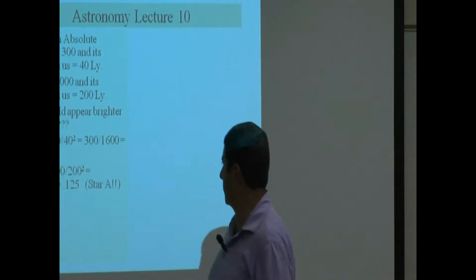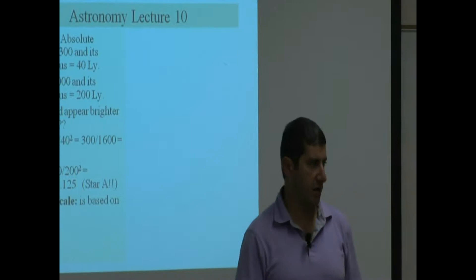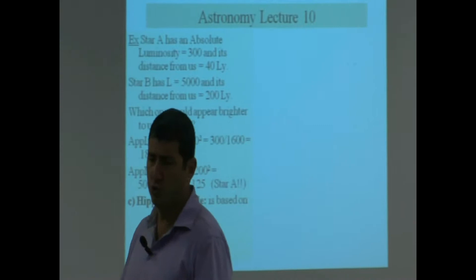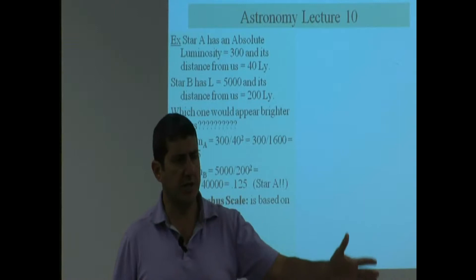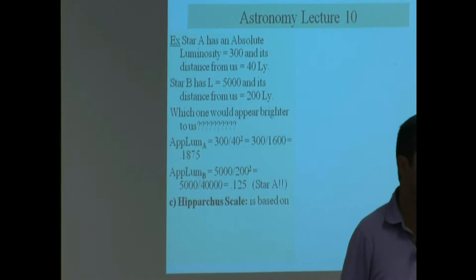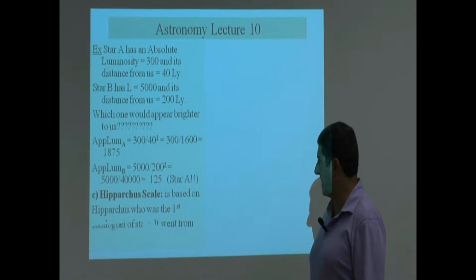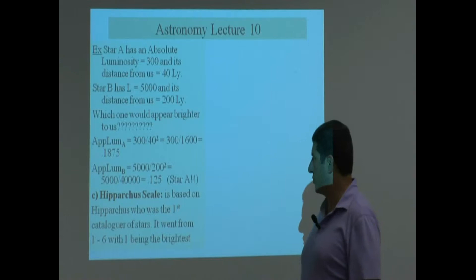Okay, now we go to the Hipparchus scale. We mentioned Hipparchus way back in Lecture 2 when we were talking about the Greek astronomers. Hipparchus was one of the first catalogers of stars. He observed stars, he cataloged them, and he gave them a certain brightness rating. He was the first cataloger of stars and he gave them a brightness rating from 1 through 6, with 1 being the brightest.